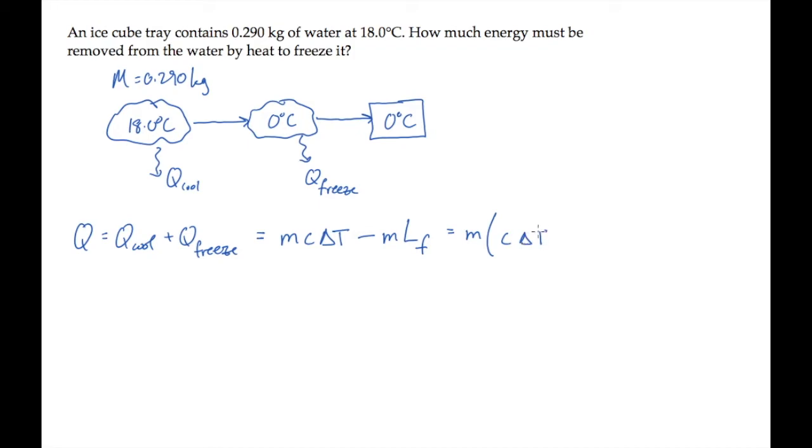We can factor out the mass M from this expression, and then substitute all the known values. The specific heat C for water is 4190 joules per kilogram Kelvin, which is the same as joules per kilogram degree Celsius, and the temperature change is negative 18 degrees Celsius. The latent heat of fusion for water is 334 times 10 to the third joules per kilogram.